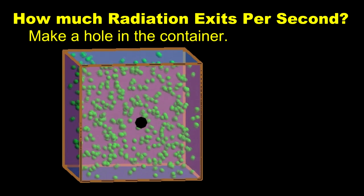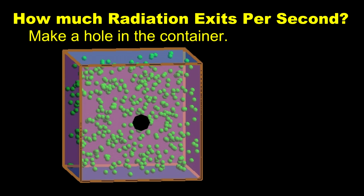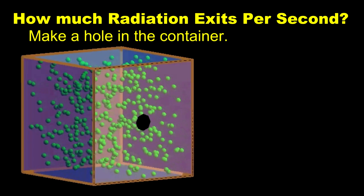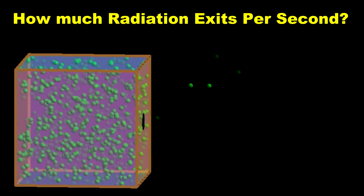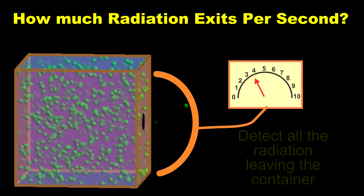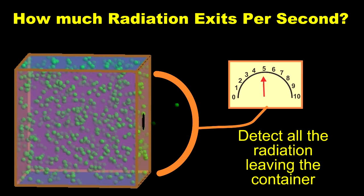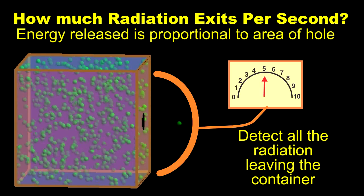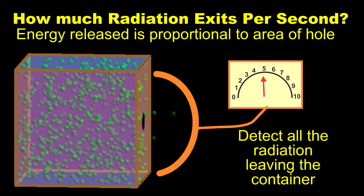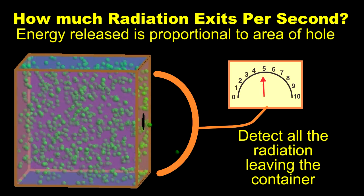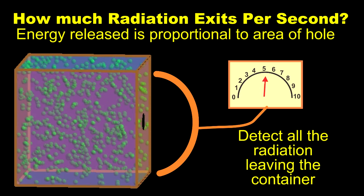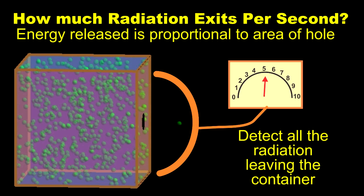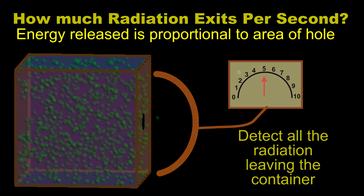So what if there's a hole in the container? How much radiation will exit the hole per second? In 1880, physicists made measurements to answer the question experimentally. They used detectors that measured the total radiation at all frequencies. The first result was that the amount is proportional to the area of the hole in the container. That's almost common sense. The hard question was how it varied with the temperature of the container.